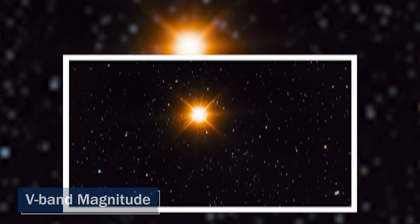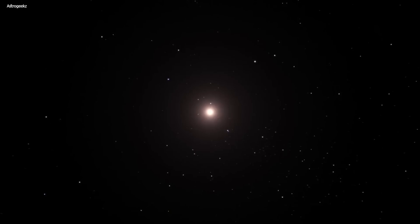Sometimes, Betelgeuse can get really dim. This is what we call a V-band magnitude. And in February 2021, it was reported to have its lowest V-band magnitude in a while, which was a magnitude of plus 1.614. That's still pretty bright, but it's definitely dimmer than what we're used to seeing from Betelgeuse.